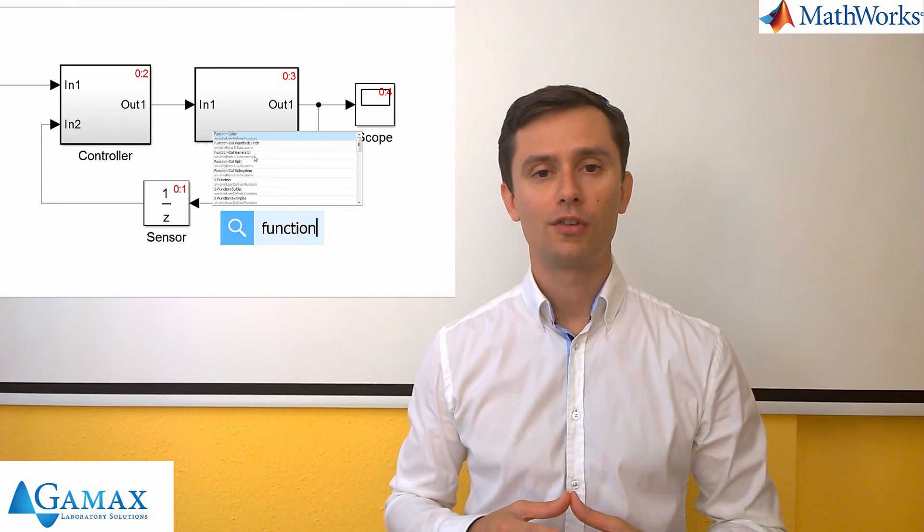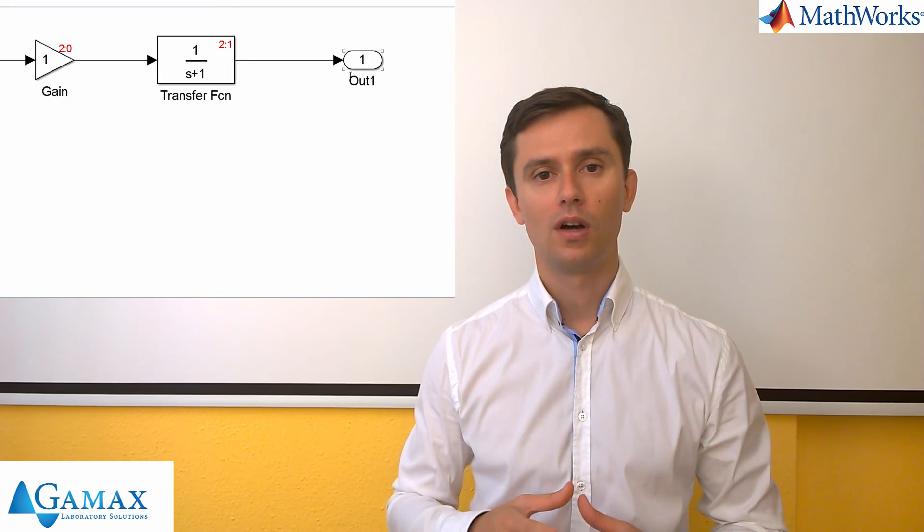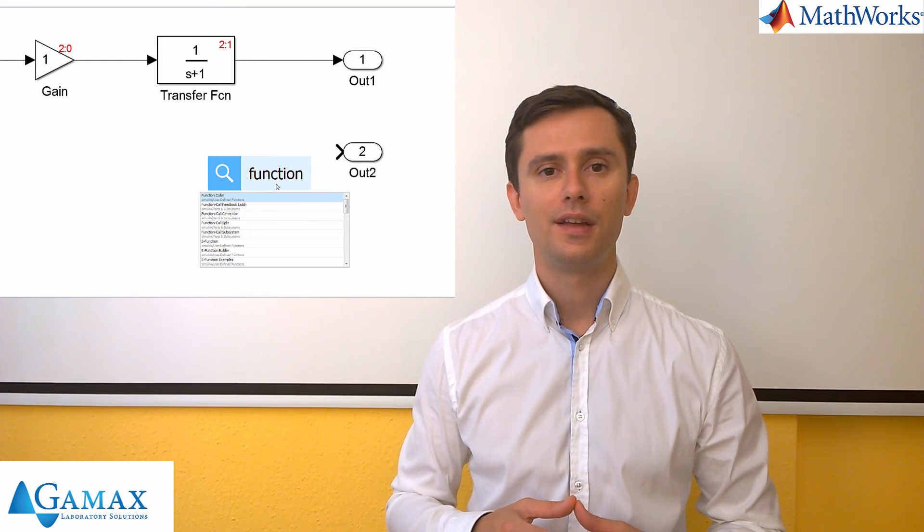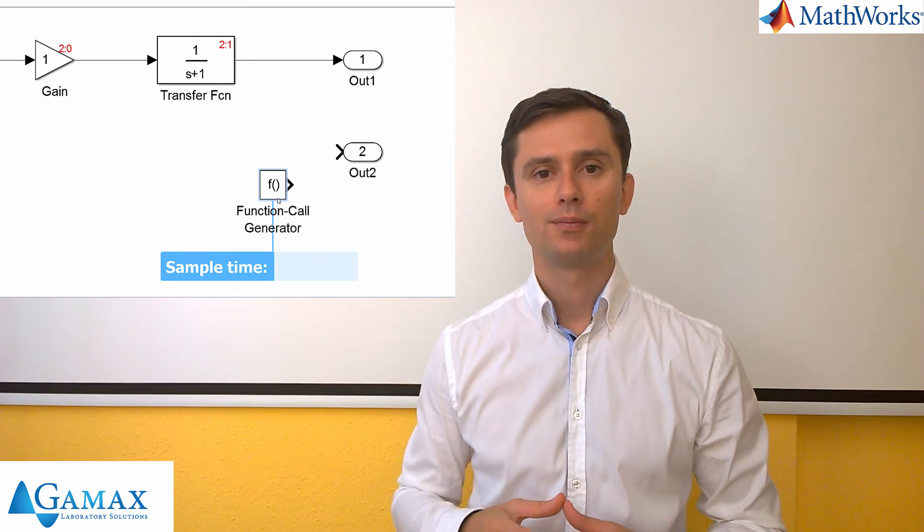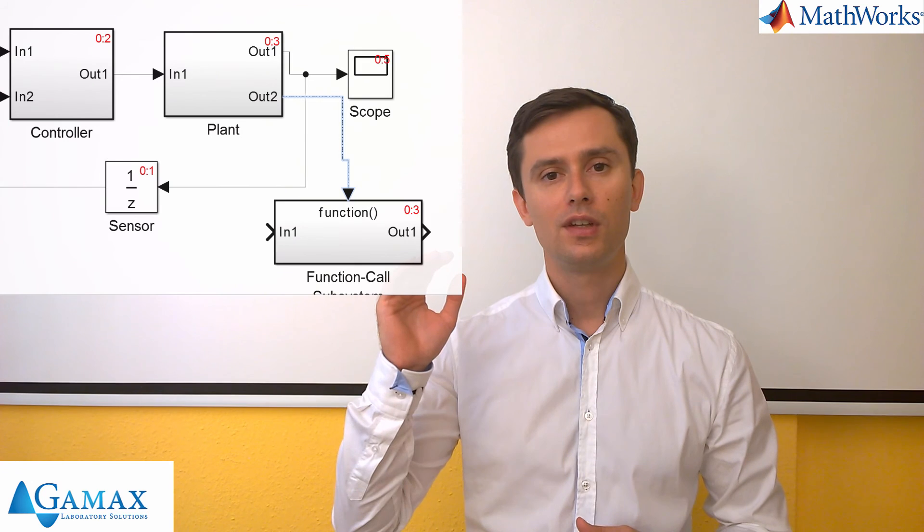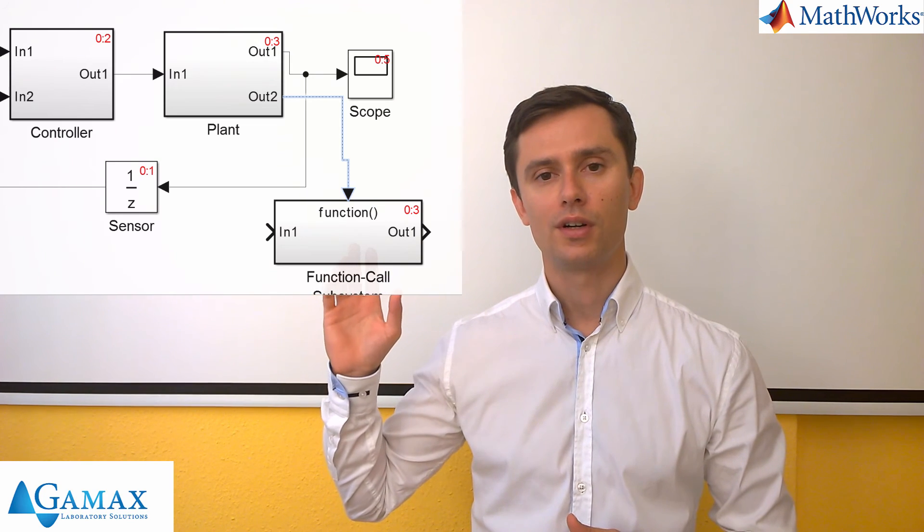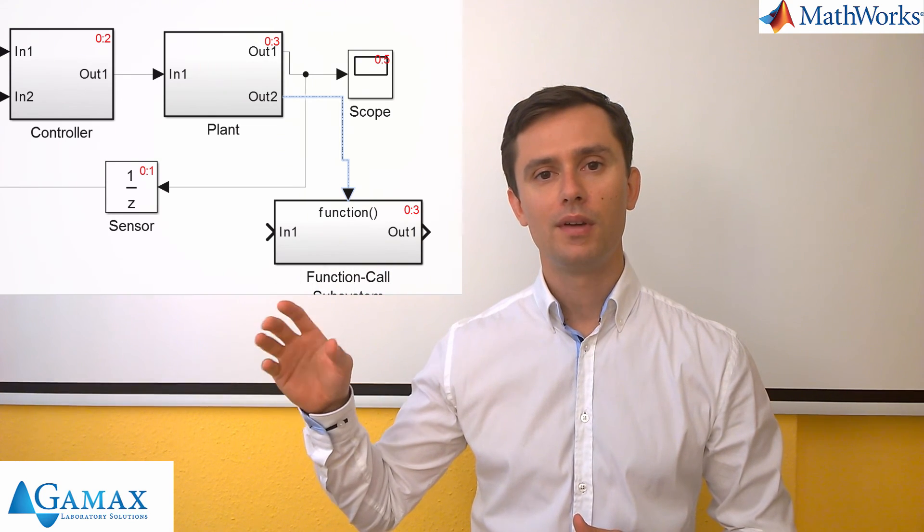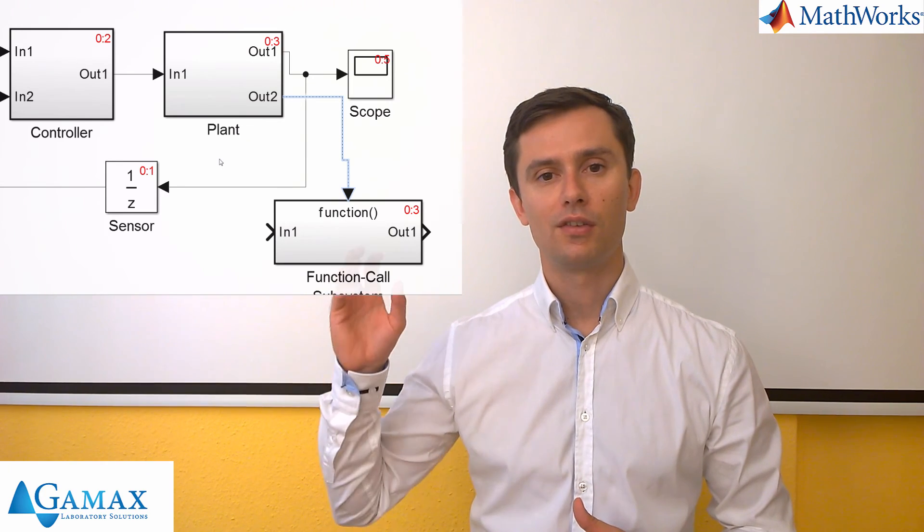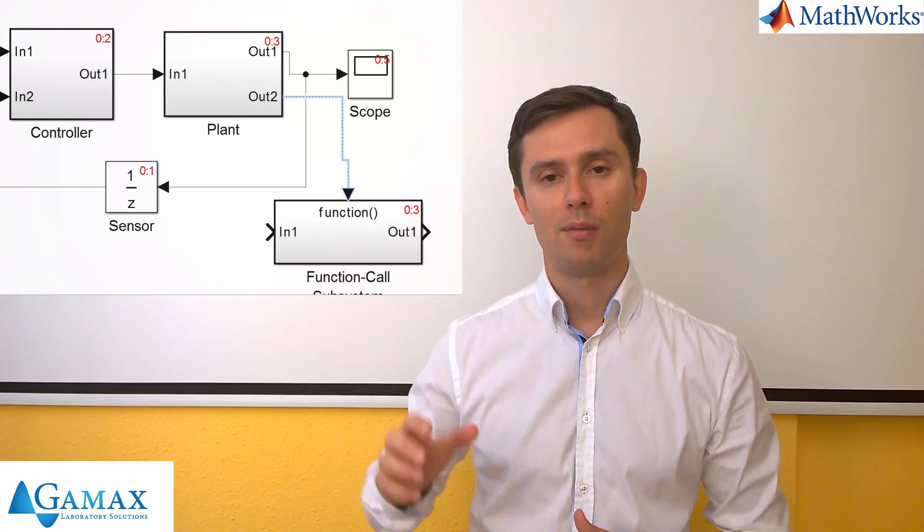Now if we want actually to command the execution order, we can do that by using function calls. So if we create a function call subsystem and we call a function call trigger block, then we can actually command our system to execute the function call subsystem at a given moment. Now, we can see that the execution order for our default model and the execution order for our function call subsystem is the same. And this is because the function call subsystem would be executed at that moment when the trigger happens. So this is how we can directly influence the execution order for the given block.